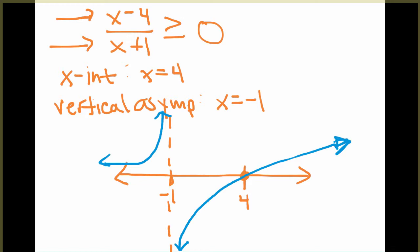If I start on the left, I'll trace along the graph because this is greater than or equal to 0. Then I have to jump down because it's a vertical asymptote. And this, from negative 1 to 4, is below 0.